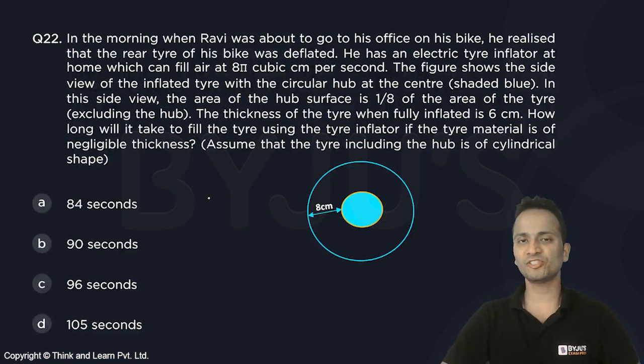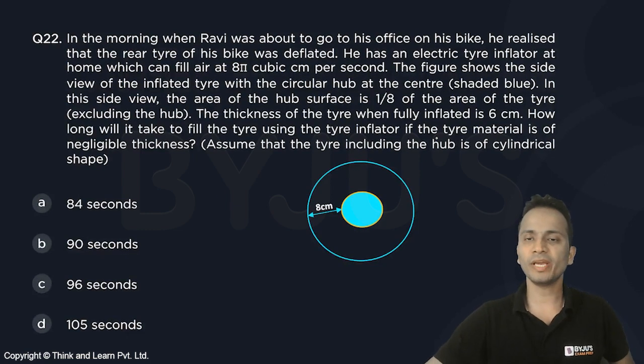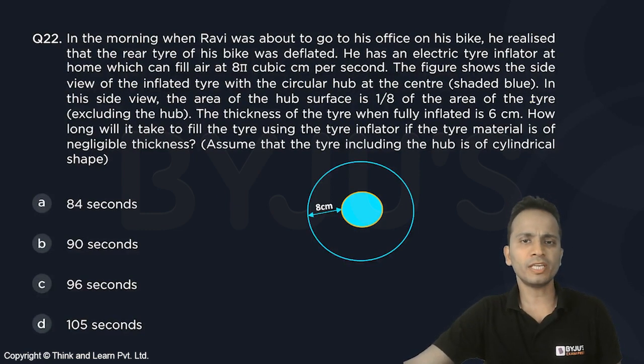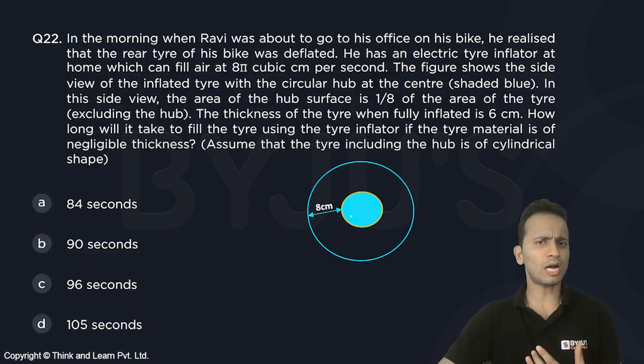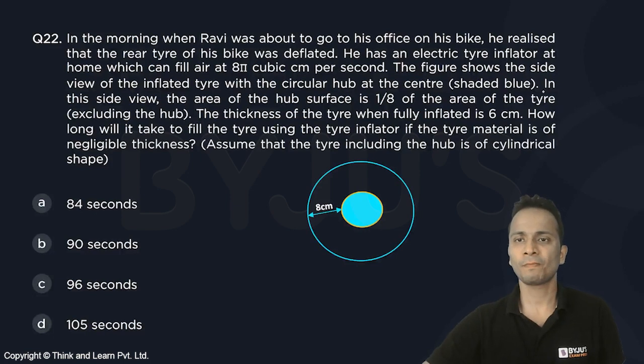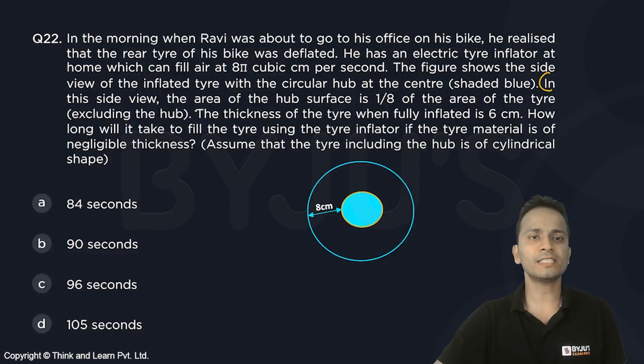You have to be smart while solving this question and you'll save plenty of time. The first important thing is to find the radius of the inner hub. How to calculate it quickly? Read from here: in the side view, the area of the hub is one-eighth the area of the tire excluding the hub.